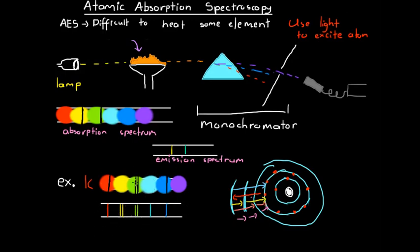That explains the difference between the two spectra for potassium. We now understand how atomic absorption spectroscopy works and the key differences between it and emission spectroscopy. In another video, we'll go through how we can further use an absorption spectrum to analyze a substance in even more detail.